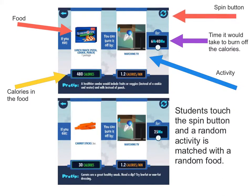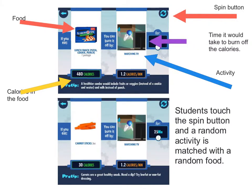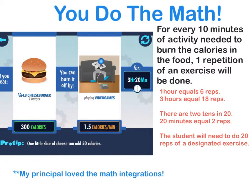Students touch the spin button and a random activity is matched with a random food. It will also tell the calories in the food and the time it would take to burn off the calories. Here you can see that carrots are 30 calories, and if you are watching TV you will burn 1.2 calories per minute — it would take 25 minutes to burn off the carrots.